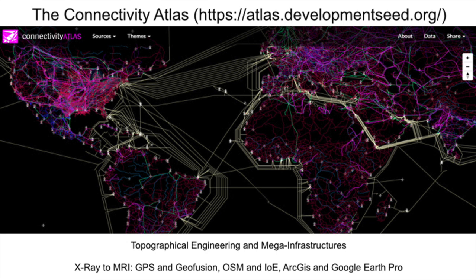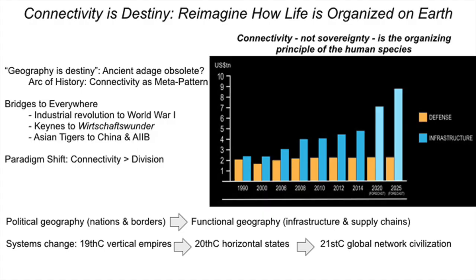So rapidly are we building out the world's infrastructure that I have been leading a process to build what is called a connectivity atlas. You can go online — it's free and open to the public — and explore and navigate all of the world's mega-infrastructures from those categories. You can toggle on and off, zoom in and out, and we are constantly updating the data because we are indeed building the world so rapidly.